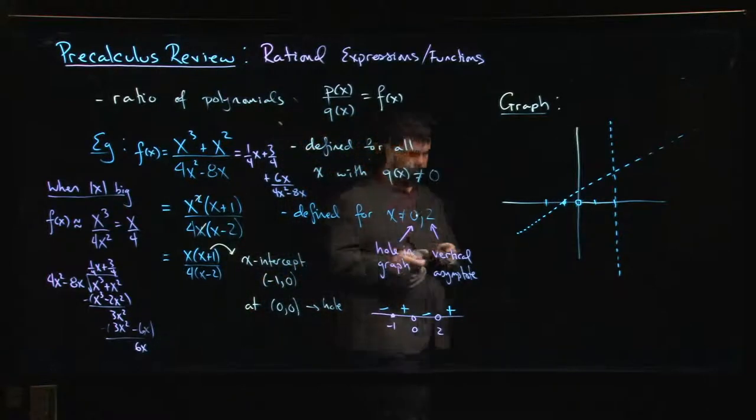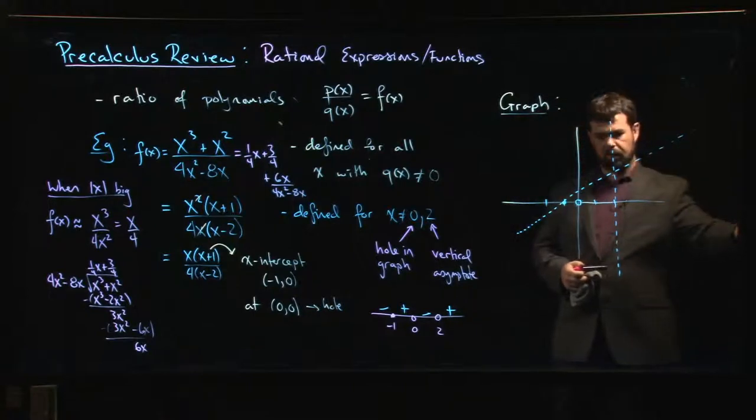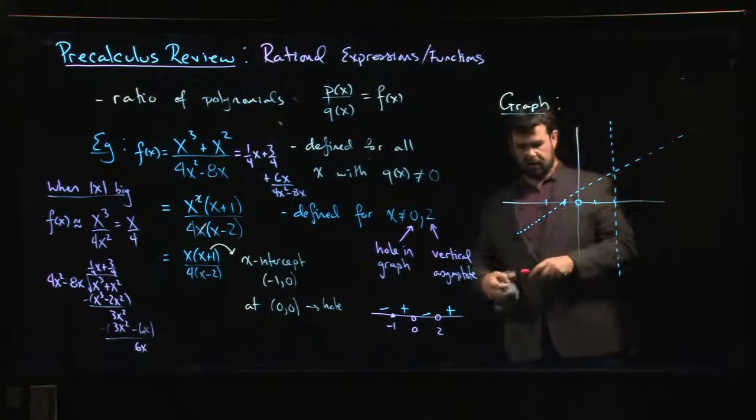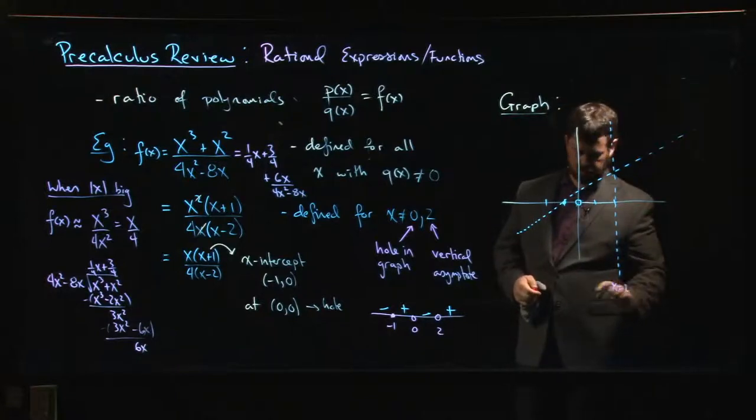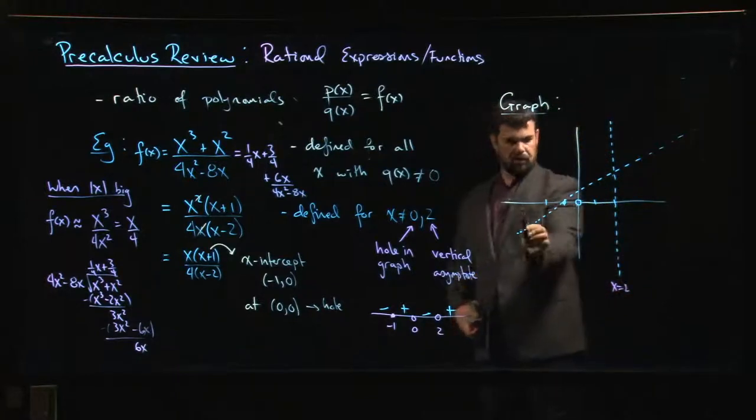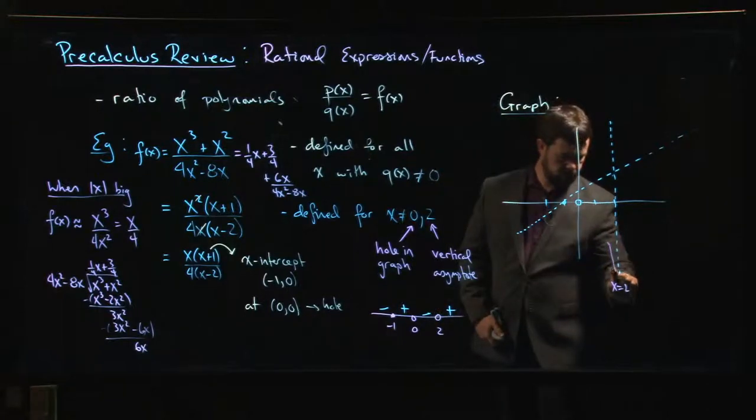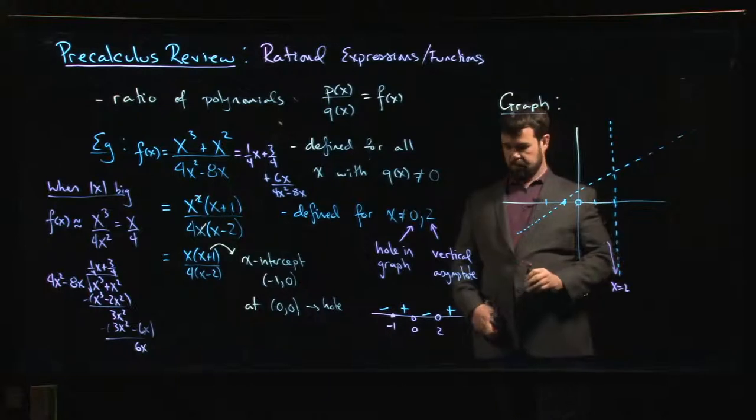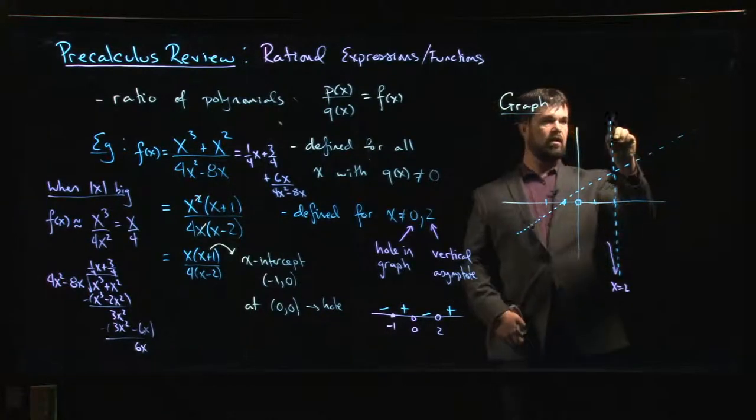So what does that tell me? Well that tells me a few things. One of the things it tells me is that at this vertical asymptote right this is at x equals two, if I'm approaching from the left my function should be negative so I should be heading down to minus infinity. If I'm approaching from the right I should be heading towards plus infinity.